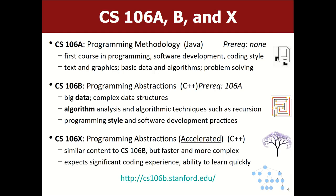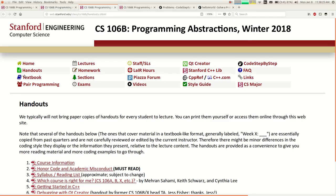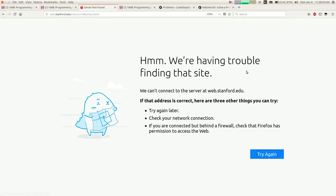106X is our other offering — basically a harder version of 106B. It's typically for people who have already programmed a lot before college or are really bored by the pace of 106A and B and want a really intense experience with more problems and challenge. 106B is the class for most people, and X is for a subset with a lot of prior experience. If you go to the class website and click on FAQ, the very first question is 'which class is right for me?' with more links and info.